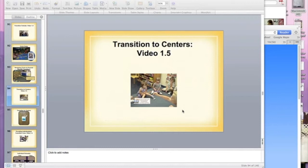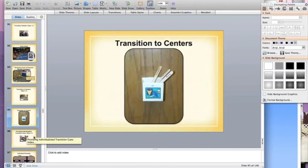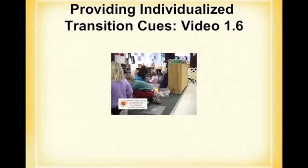Here's a way to transition to centers where there are little boxes for the centers and children's names are on popsicle sticks — they just put their name in the center box where they're going.